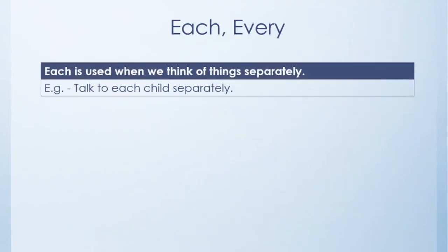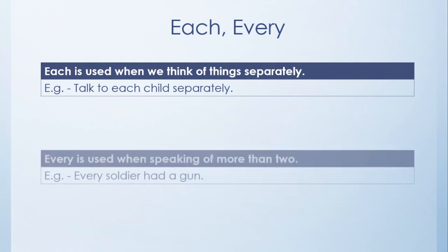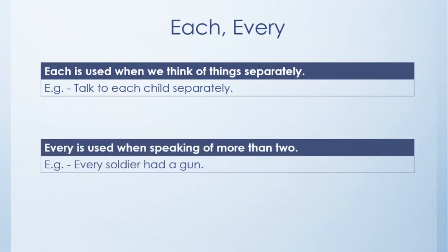Each and every are also distributives. 'Give up to each child separately.' Each is used when we think of things one by one, separately. 'Every soldier had a gun.' Every is used when we think of things as a group, meaning without exception. Each is used for a small, limited, definite group; every is used when the number is large or indefinite.